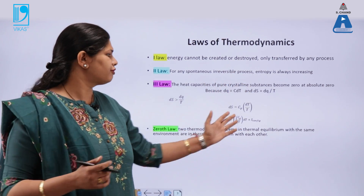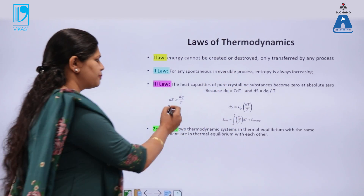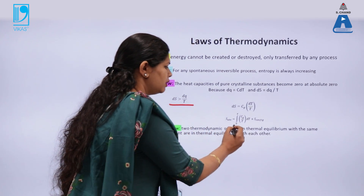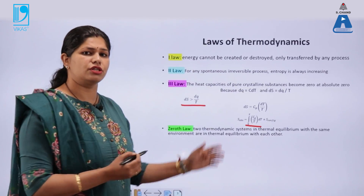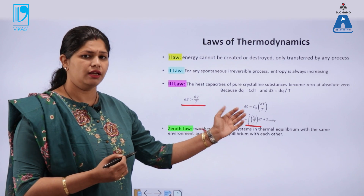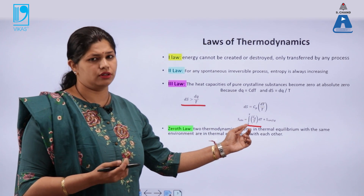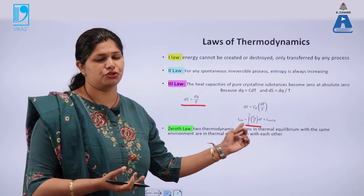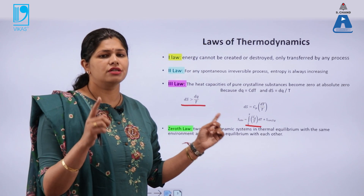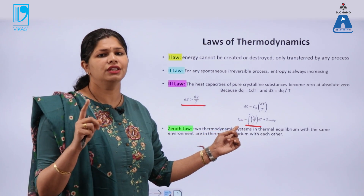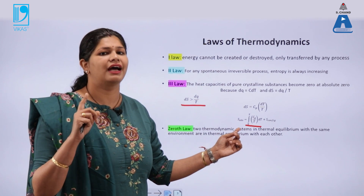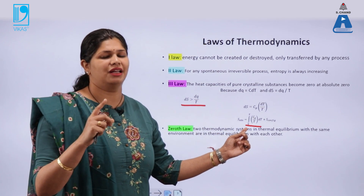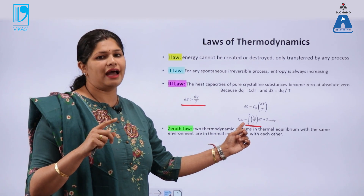This is the basis of finding out the absolute entropy, because if you integrate within the limits zero to T, the entropy of the perfectly crystalline solid is zero at the lower limit. So one can find out the absolute entropy. This is the only state function in thermodynamics that can be calculated absolutely.